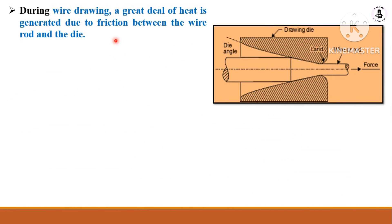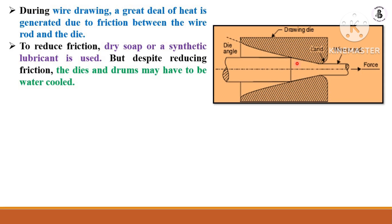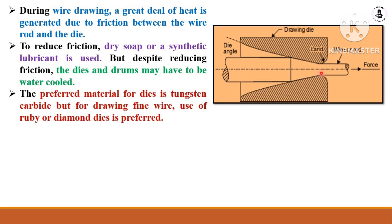During wire drawing, a great deal of heat is generated due to friction between the wire rod and the die material. To reduce this friction, a dry soft or synthetic lubricant is used to increase manufacturing effectiveness and the life of the die. Despite reducing friction, the dies and drums may also need to be water cooled. The preferred die material is tungsten carbide, but for drawing fine wires, ruby or diamond dies are preferable.